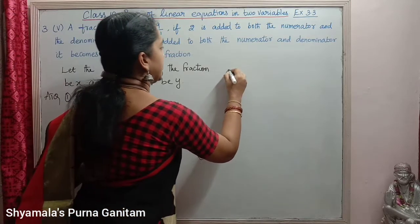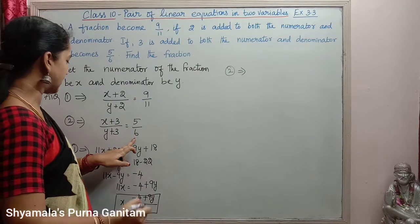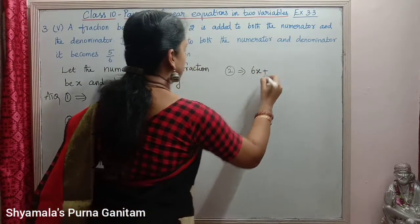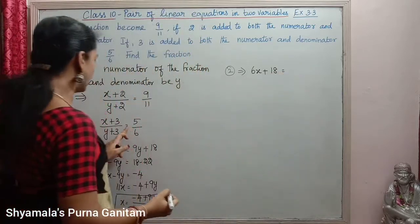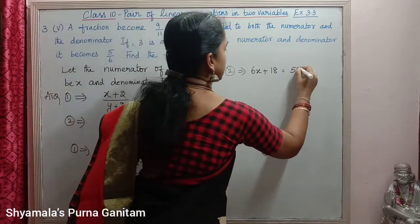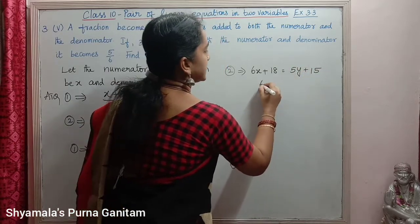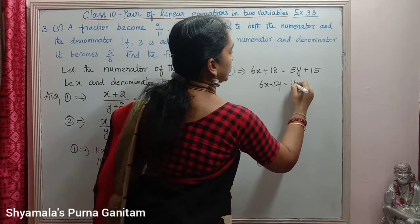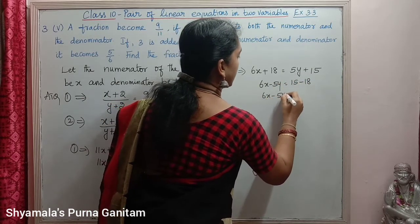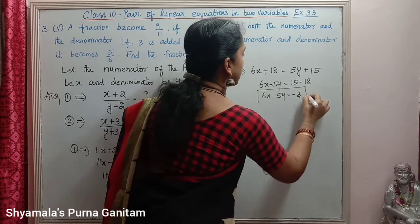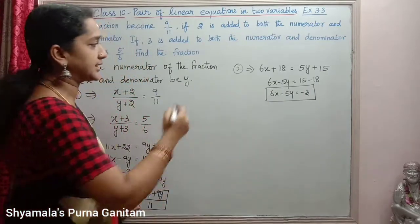Now we will take the second equation and cross multiply. That gives 6(x + 3) = 5(y + 3), so 6x + 18 = 5y + 15. Therefore 6x minus 5y equals 15 minus 18, giving 6x minus 5y equals minus 3. This is the simplified second equation.